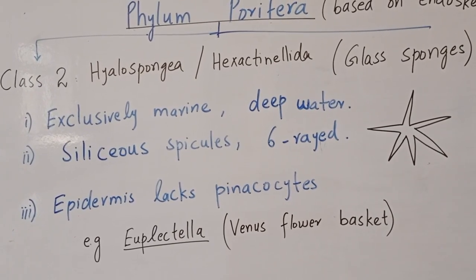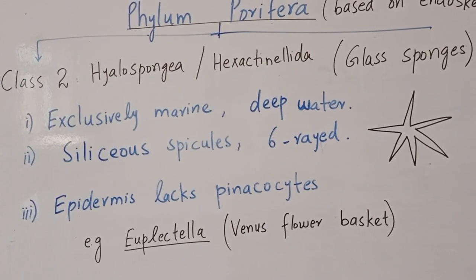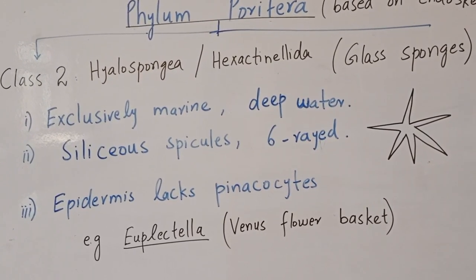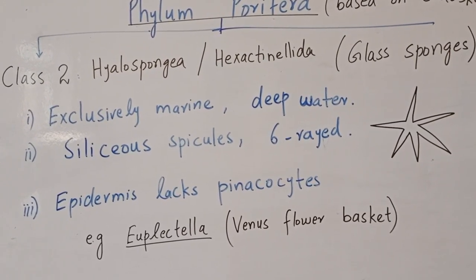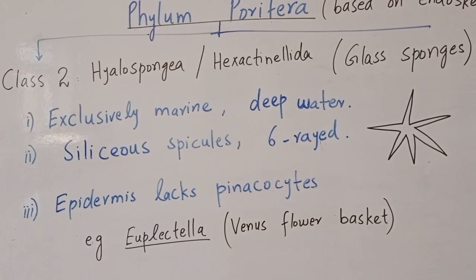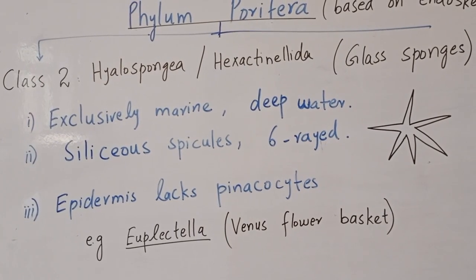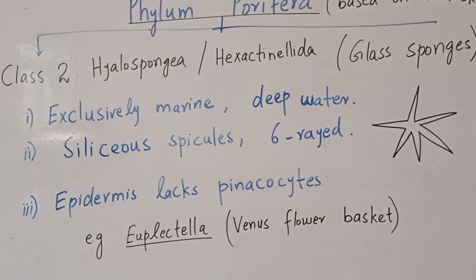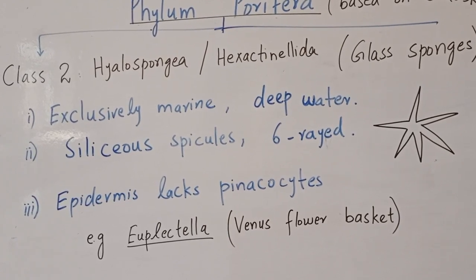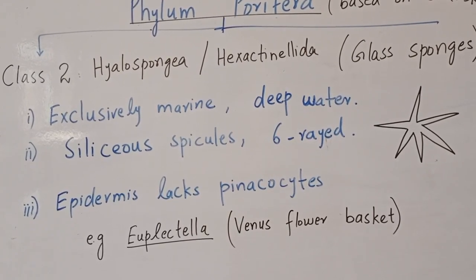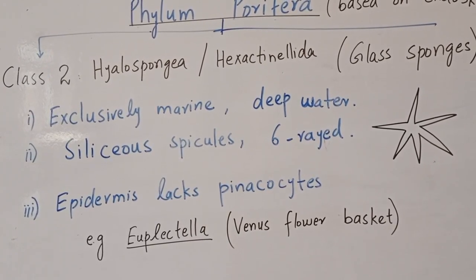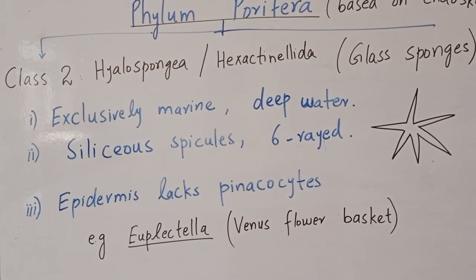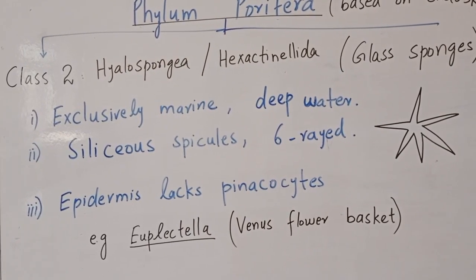In Hyalospongia, the outer layer — the epidermis made of pinacocytes — is absent. A well-known example is Euplectella, commonly known as Venus' flower basket, which is used for ornamental purposes.